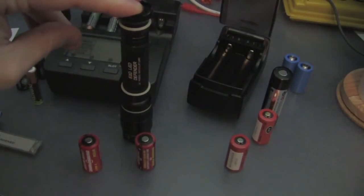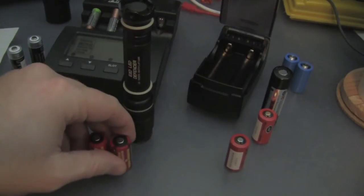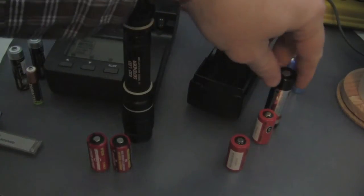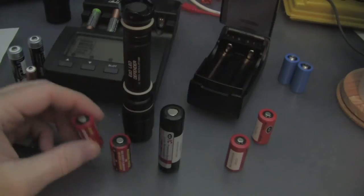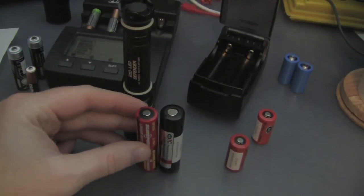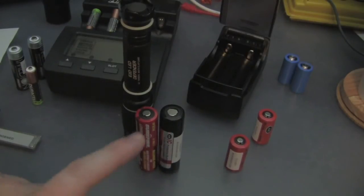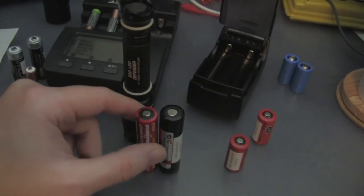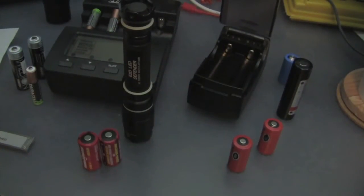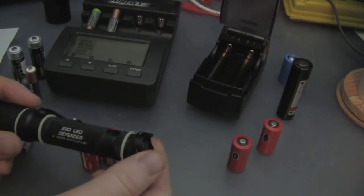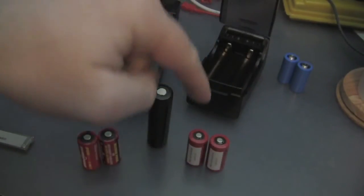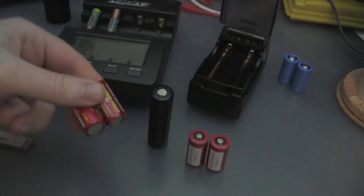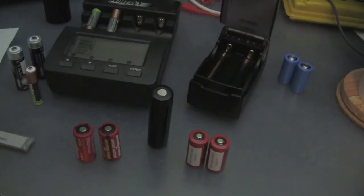Now, this Surefire E2D LED Defender runs on two primaries. So, that's 6 volts. It would be safe to assume that it could run on one 4.2 volt battery. You would probably get a reduced output and definitely reduced run time. But, as you can see, that rechargeable 18650 is the same size lengthwise as two primaries. I wouldn't use it with these two batteries because that's 4.2 plus 4.2, 8.4 volts, which is 2.4 volts higher than the 6 volts out of the two primaries.